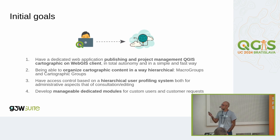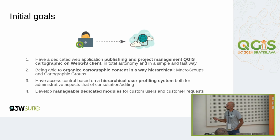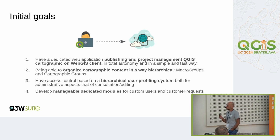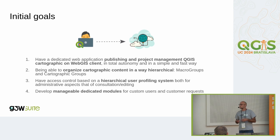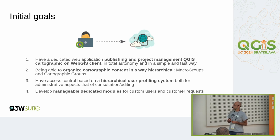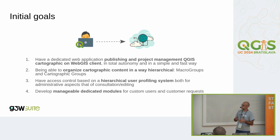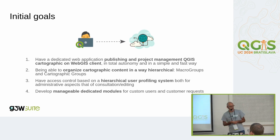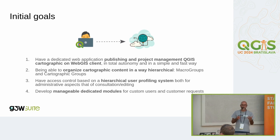The idea behind the birth of the project can be summarized in four points: first, having a web application for publishing QGIS projects as web GIS services with a few steps in a very simple way; second, having a system for organizing web GIS services inside containers such as cartographic groups and micro cartographic groups with a hierarchical structure; third, having an access control list in front of our web GIS services, made by users and groups of users organized in a hierarchical structure.